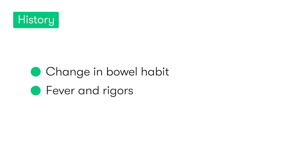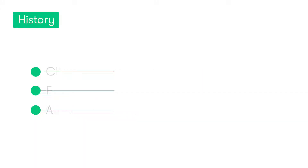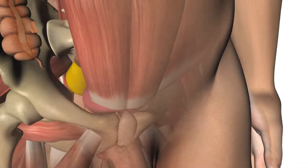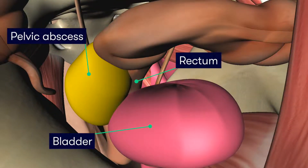The patient may also describe a change in their bowel habit, as well as the presence of fevers or rigors — these latter two are consistent with the presence of infection or inflammation. Quite commonly, the patient may also experience anorexia, nausea, and vomiting. If the patient has inflammation of the colon or an abscess lying next to the urinary bladder, this can sometimes lead to bladder irritation symptoms.